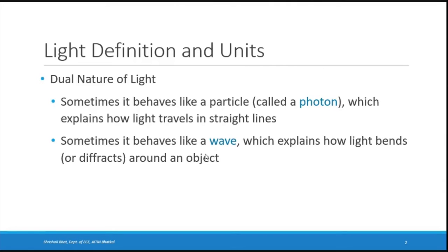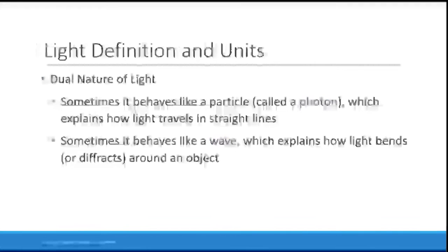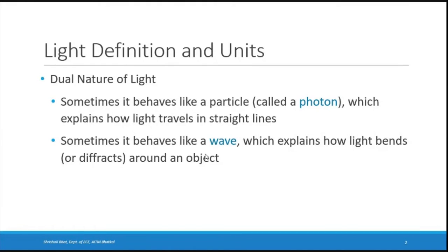Light follows a dual nature — sometimes it behaves like a particle and sometimes like a wave. As a particle, it is called a photon, a packet of light, which explains how light travels in straight lines. For some properties we use the particle nature, and for others we use the wave nature.